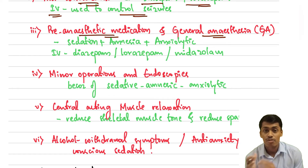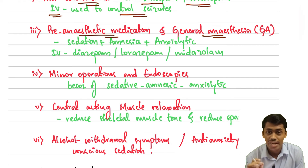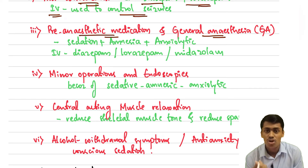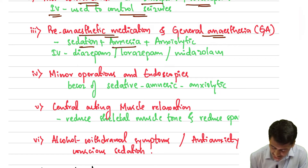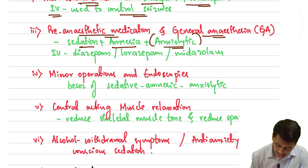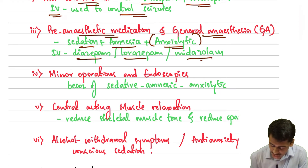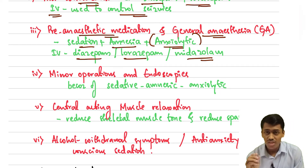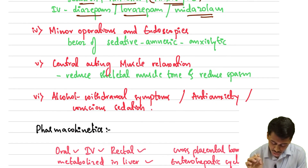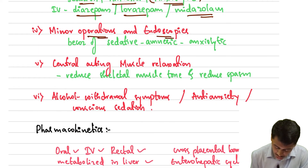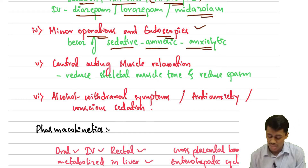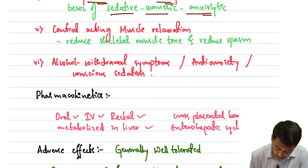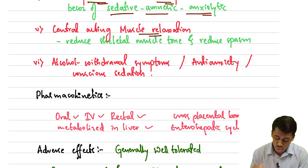They can also be used as pre-anesthetic medication and in general anesthesia. Before giving general anesthesia, we give pre-anesthetic medications, and benzodiazepines help with sedation, amnesia, and reducing anxiety — called the anxiolytic effect. Drugs used include IV diazepam, lorazepam, and midazolam. They are also useful in minor operations and endoscopies because of their sedative, amnesic, and anxiolytic effects.